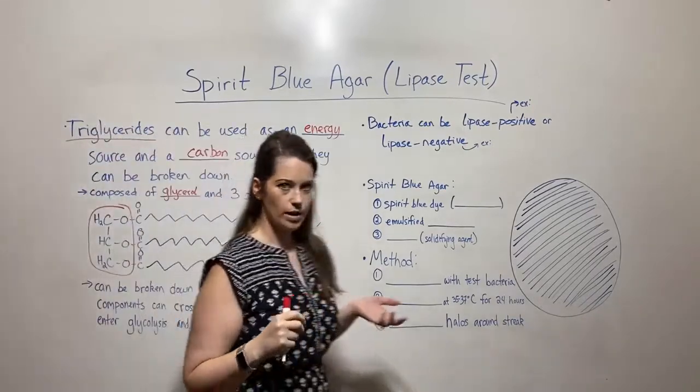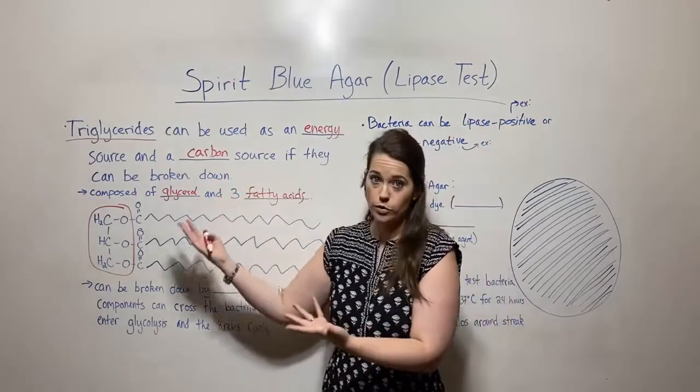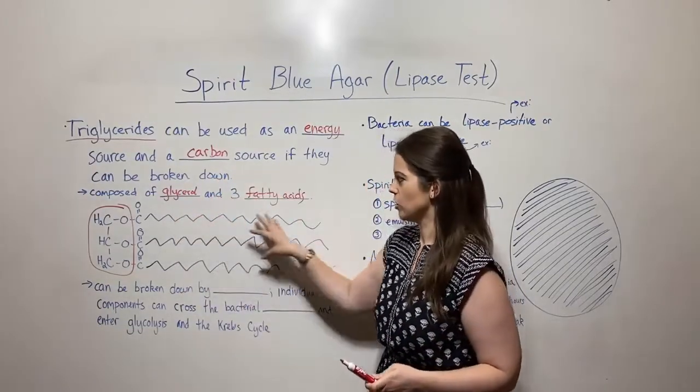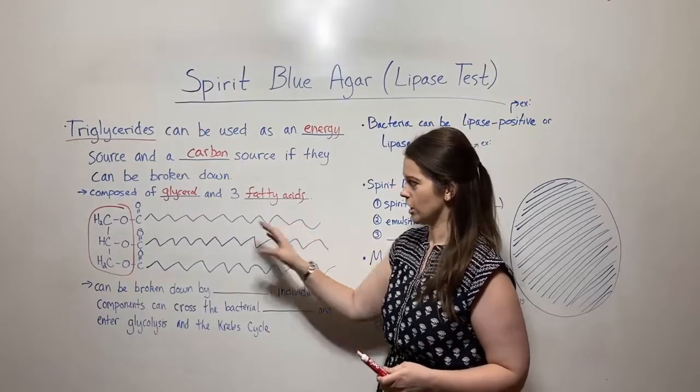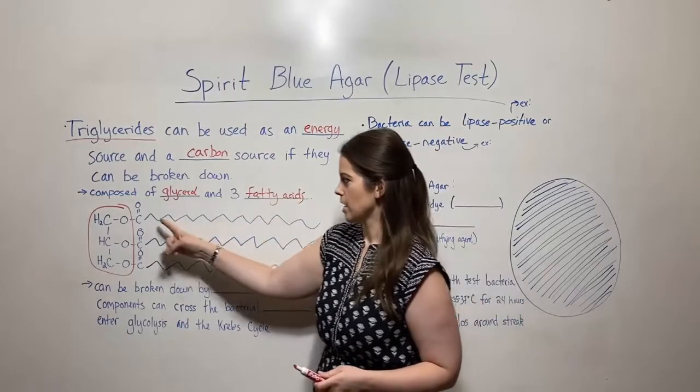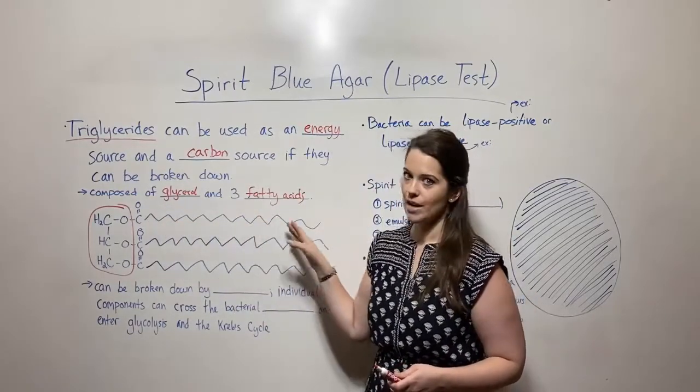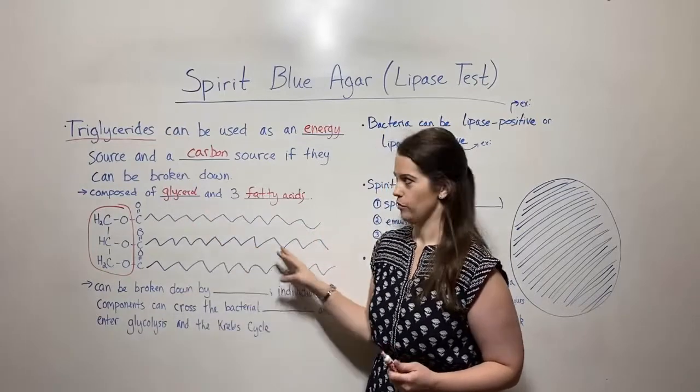This is what a triglyceride looks like. We as humans eat food with triglycerides all the time and break it down, using it as a source of energy by breaking down these bonds that releases energy and as a carbon source. These long tails are long hydrocarbon chains, so very carbon rich.